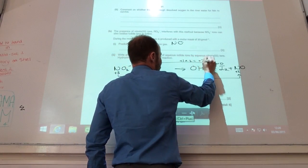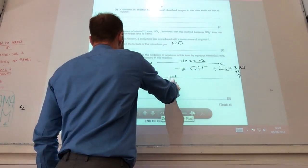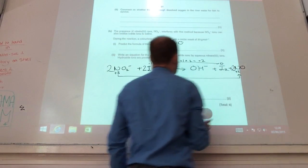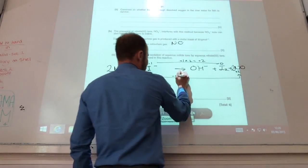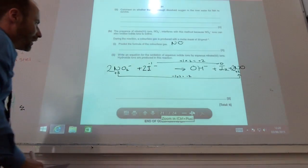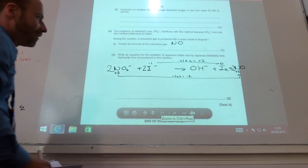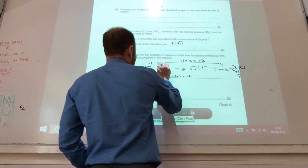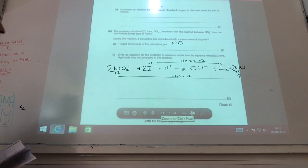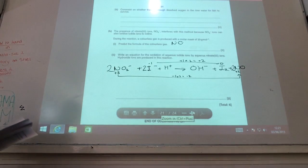So overall that is a change of plus 2. So I need to times this one by 2, so that the oxidation states balance as well. So that's looking okay now. I've got hydrogen here, but I haven't got any hydrogen there. So I need to get some H⁺ there at the same time.